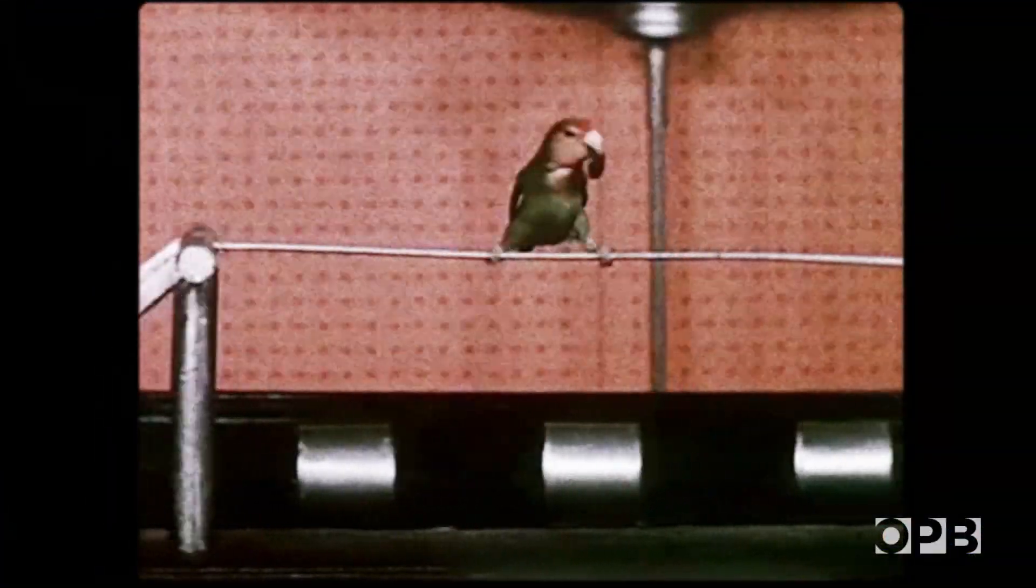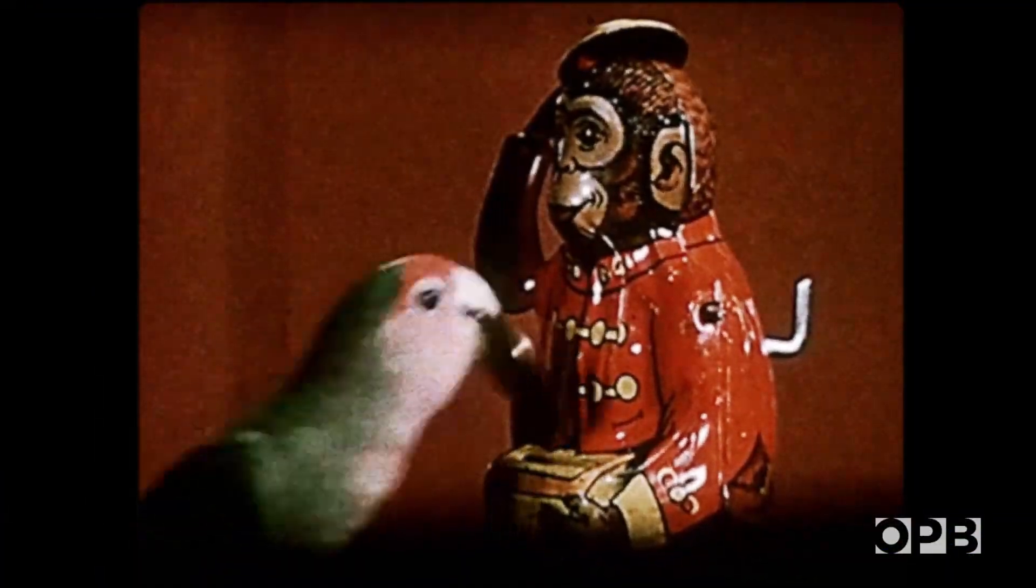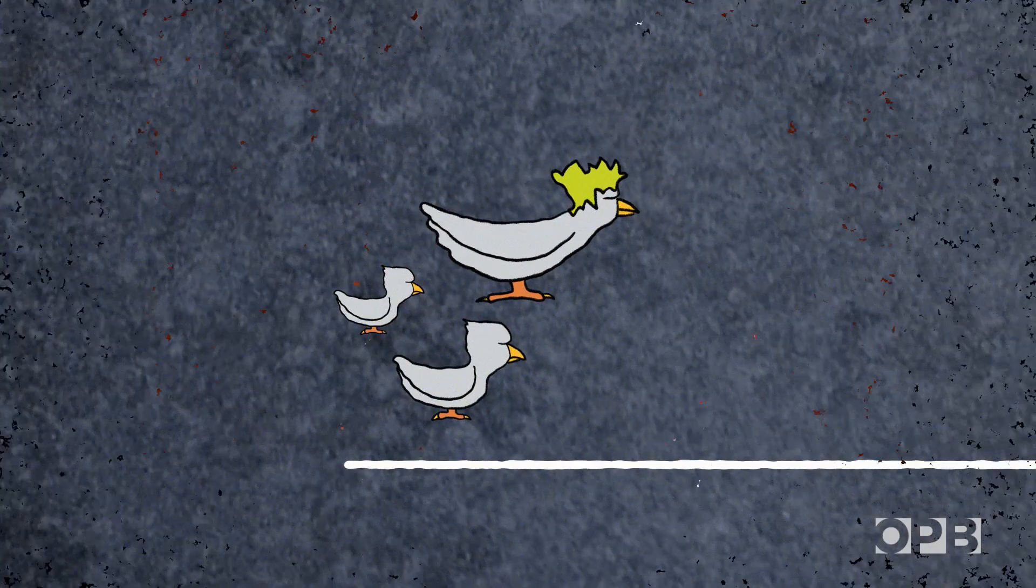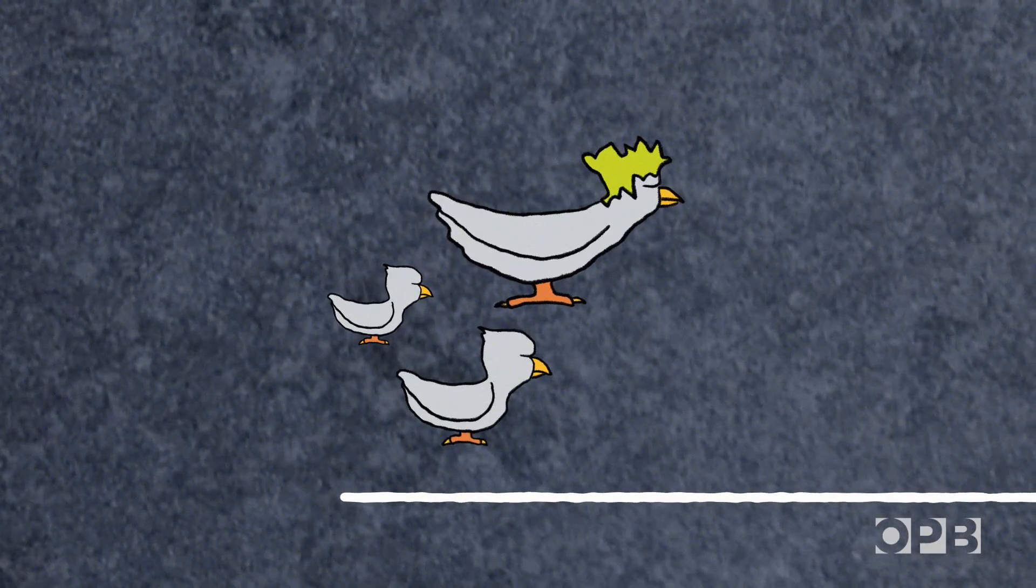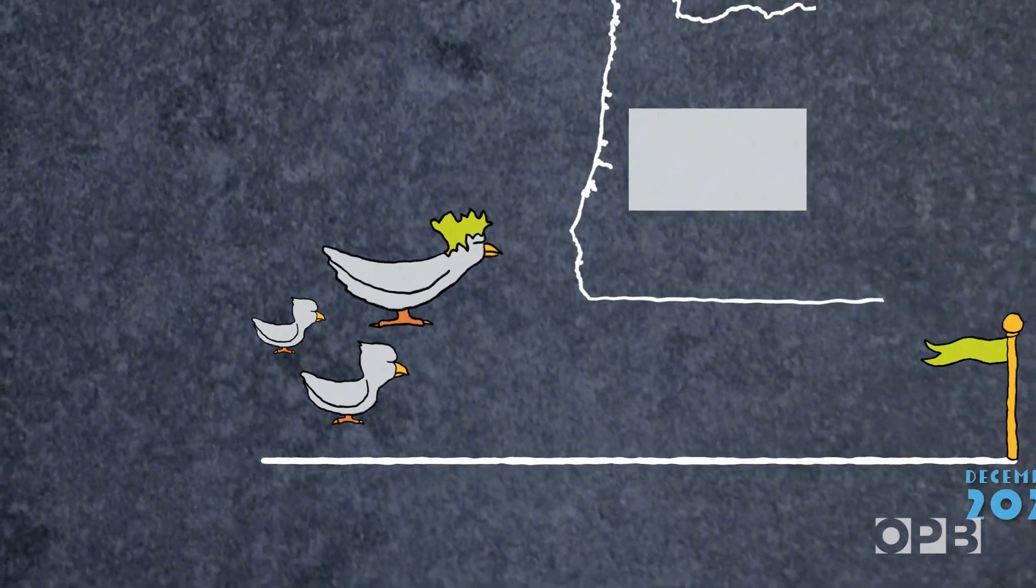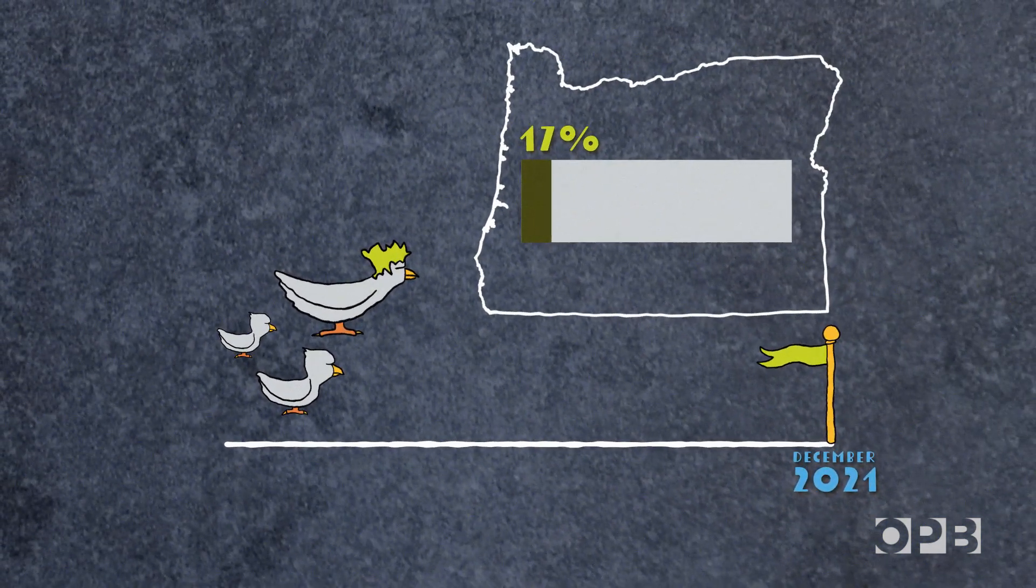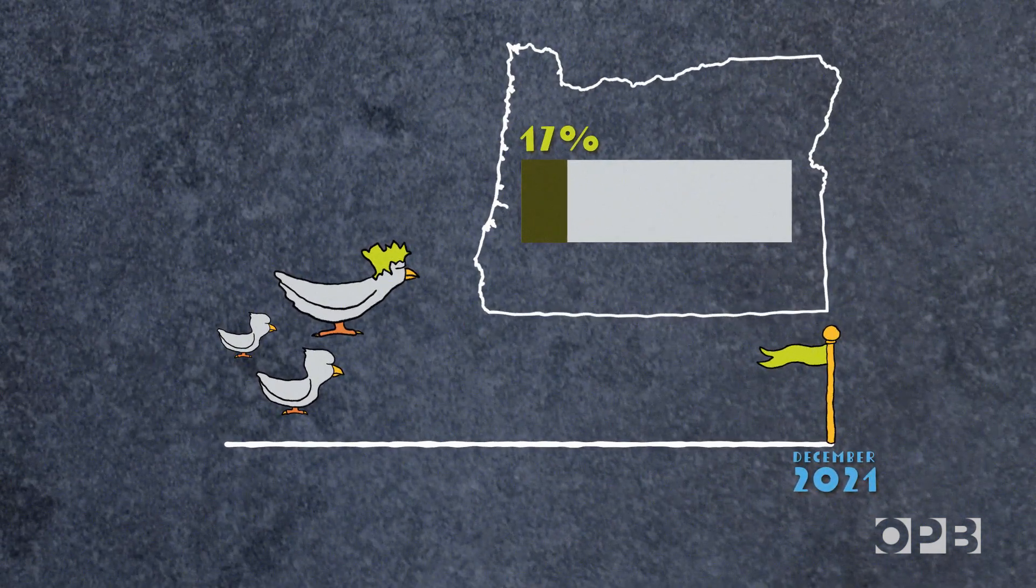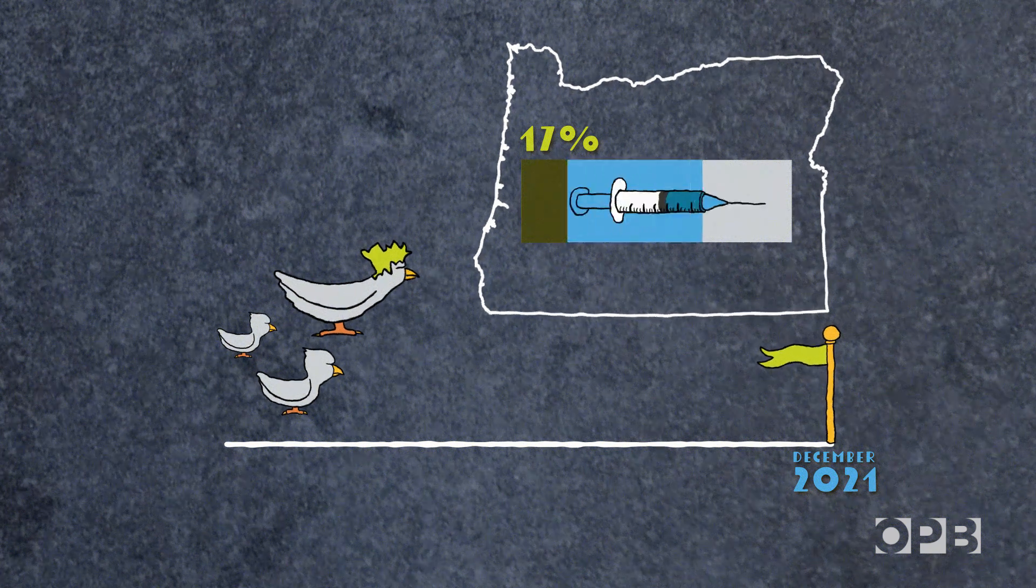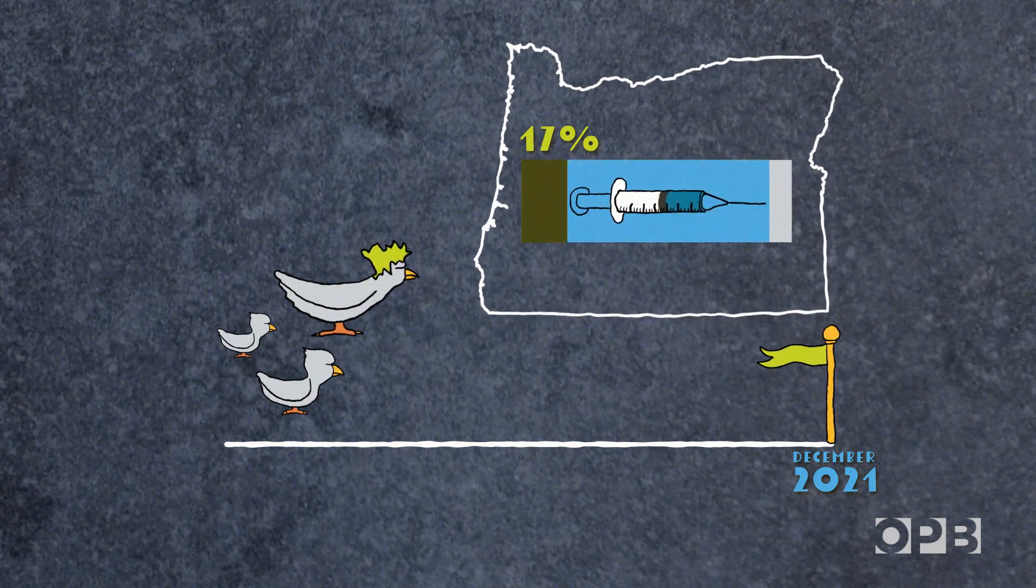Pretty straightforward, right? Nope, it's never that easy. First off, the vaccine hasn't been approved for kids and teens under 16. That's about 17% of Oregon's population who can't get vaccinated. That means 90% of the remaining adults will need vaccines to hit herd immunity.